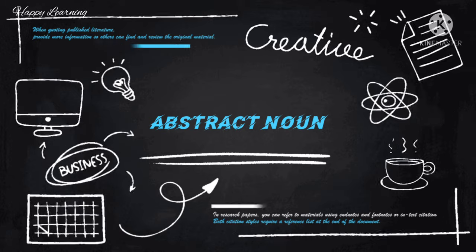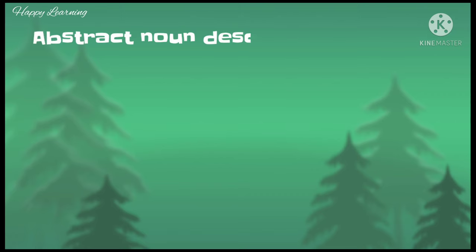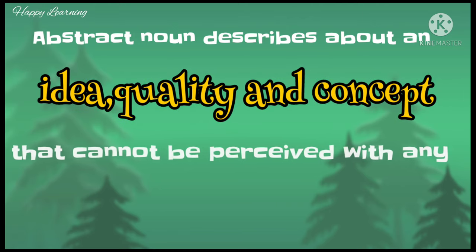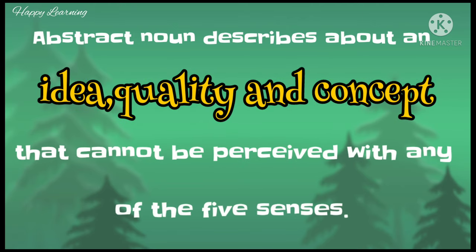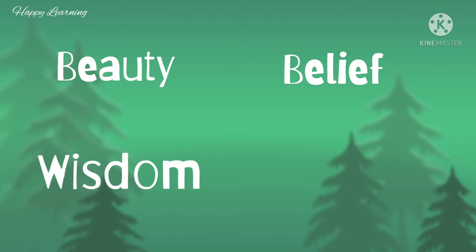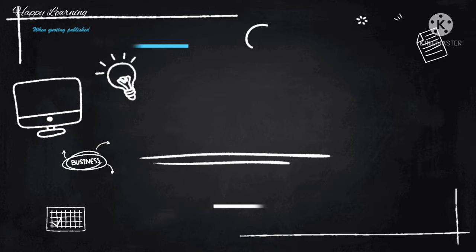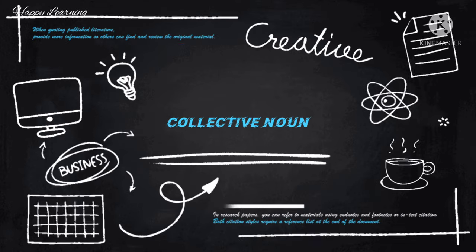Next is the abstract noun. Abstract nouns are totally different from concrete nouns — they describe an idea, quality, or concept that cannot be perceived with any of our five senses. They are the opposite of concrete nouns. For example: beauty, belief, wisdom, education, etc.